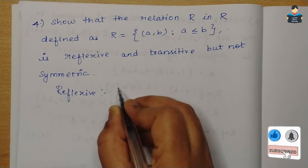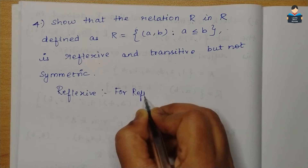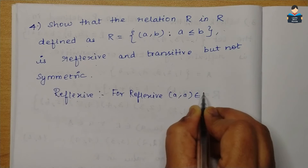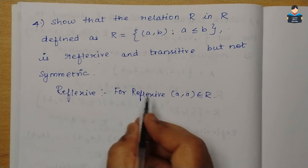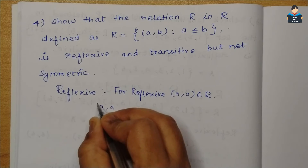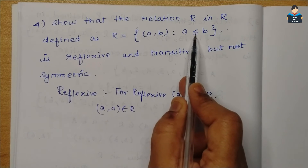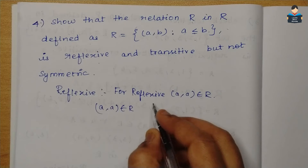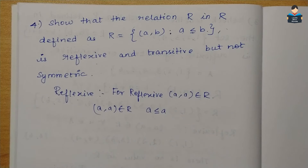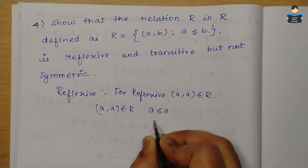First, we check reflexive. We know the condition for reflexive: (a,a) belongs to R. Here, (a,a) belongs to R means a is less than or equal to a.